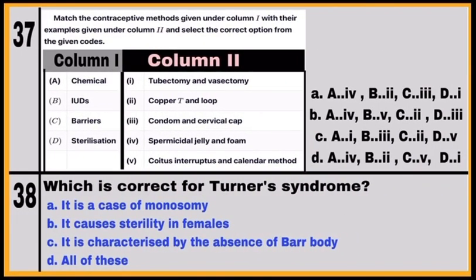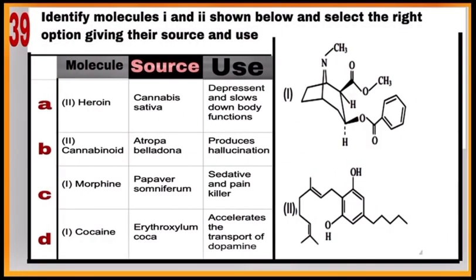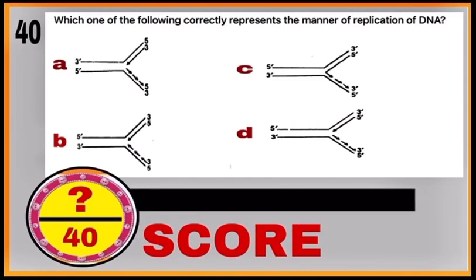Question 39 is based on drugs, and question 40 is based on the replication of DNA. Now, after completing all questions, find your score.